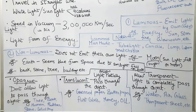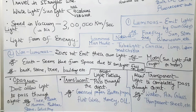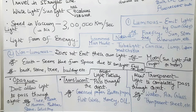Transparent objects allow light to completely pass through them. Examples include water, air, glass, and other transparent sheets like glaze paper. They allow light to pass through them wholly.